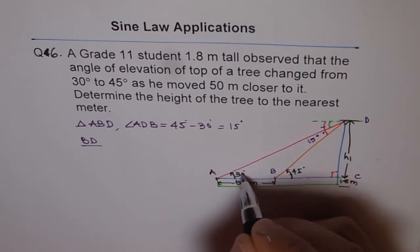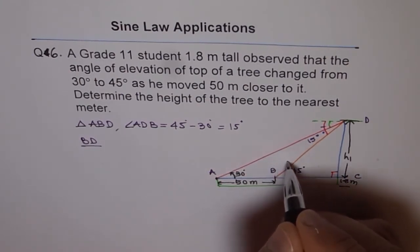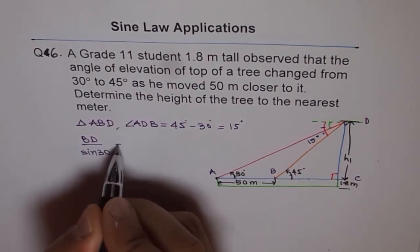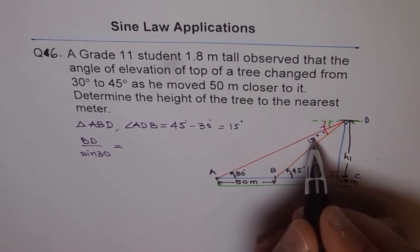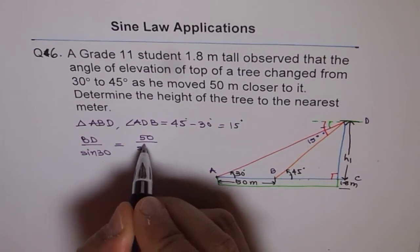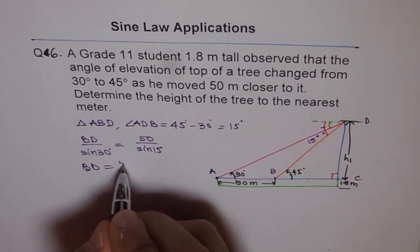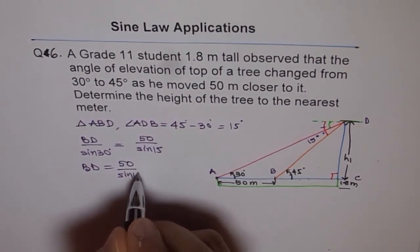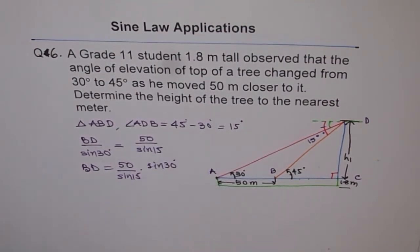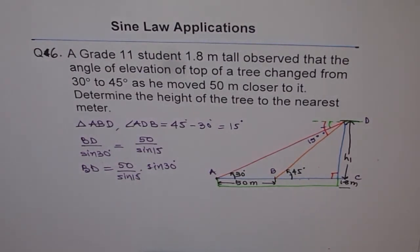We say BD over angle opposite to this side. So the angle opposite to this side is 30 degrees. Do you see? If you see from 30, then you hit this side. So it is sine 30. Is equal to 50 and opposite angle is 15. So it is 50 over sine of 15 degrees. Now BD from here is just a ratio thing. We cross multiply and find out which is 50 times sine of 30 divided by sine of 15. And you get 96.59. So let me write 96.6 here.